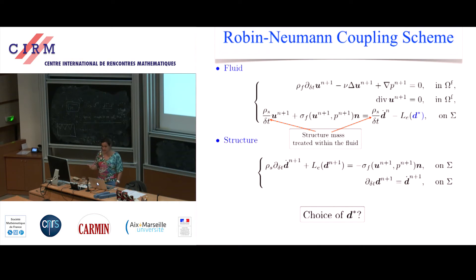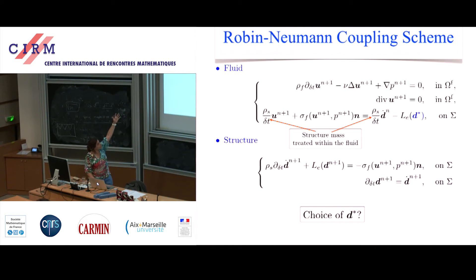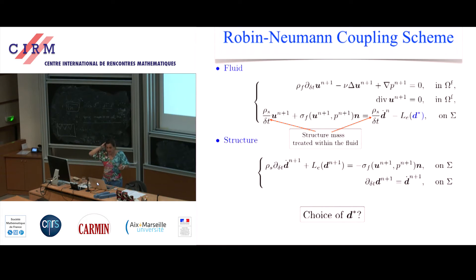Instead of solving fluid plus Dirichlet-Neumann boundary condition and structure with a given force, you have replaced the system: you solve the fluid plus Robin boundary conditions coming from the equation of the structure. The first remark is that the mass of the structure is then treated within the fluid.